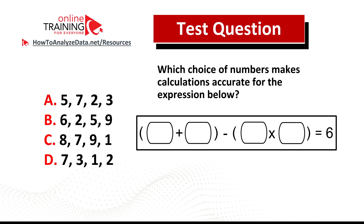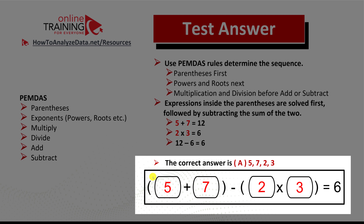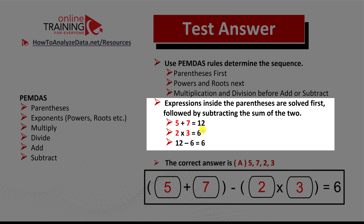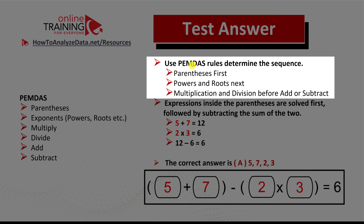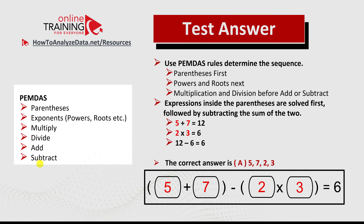To get to the correct solution, remember that calculations in parentheses are done first. You need to pick numbers that match the end result of 6. The correct combination is choice A: 5 7 2 3. Let's verify: 5 plus 7 equals 12, 2 multiplied by 3 equals 6, and 12 minus 6 equals 6. Remember the keyword PEMDAS: parentheses first, powers and roots next, then multiplication and divisions before addition and subtraction. PEMDAS represents the order of operations.